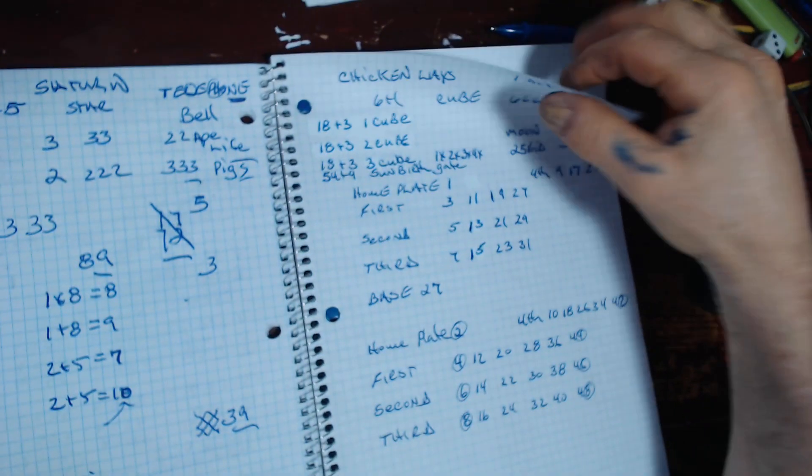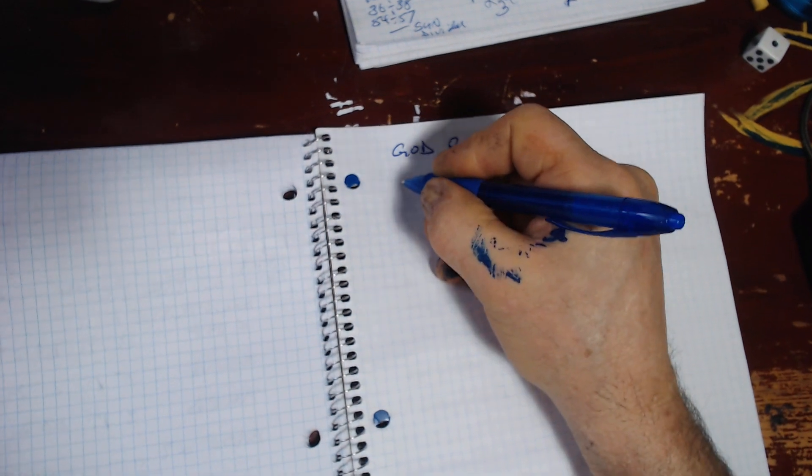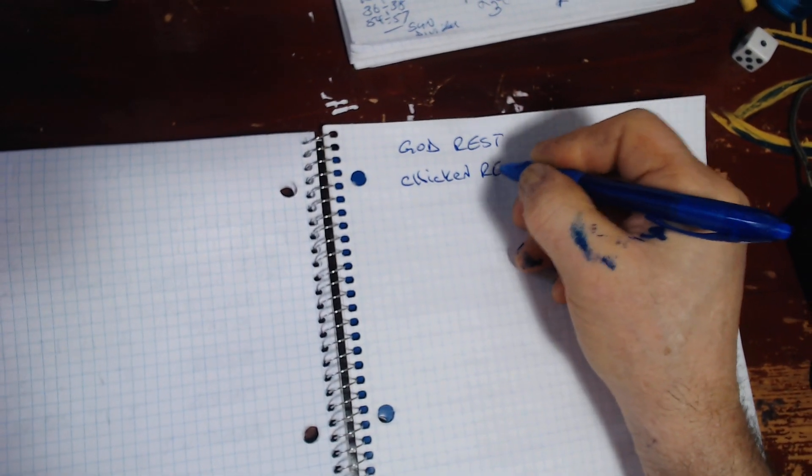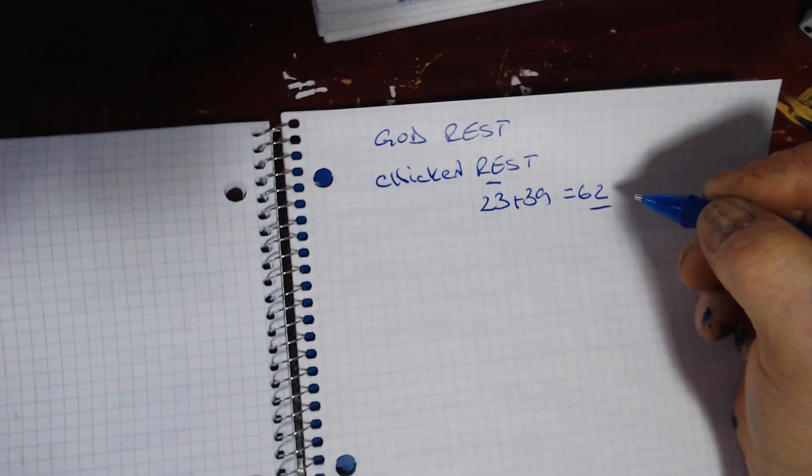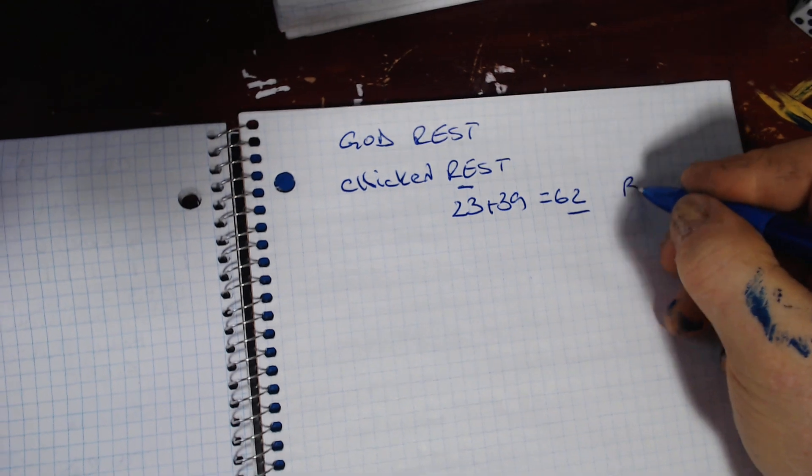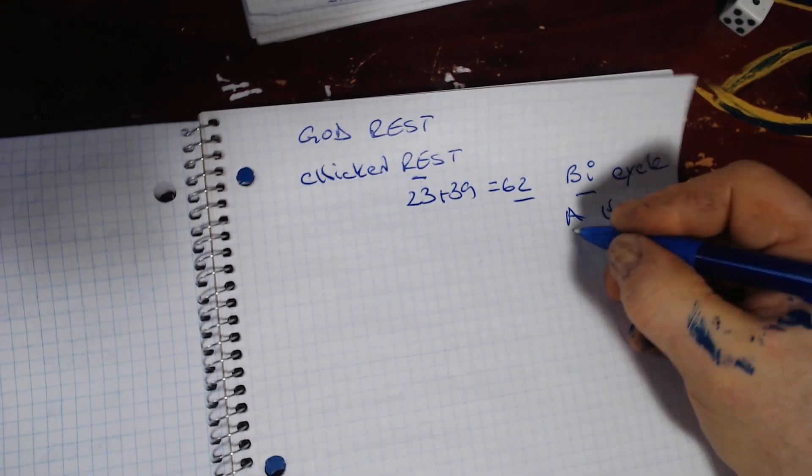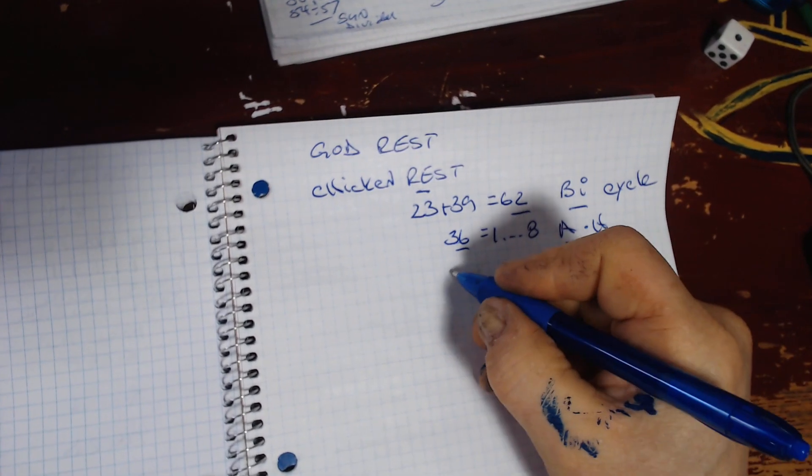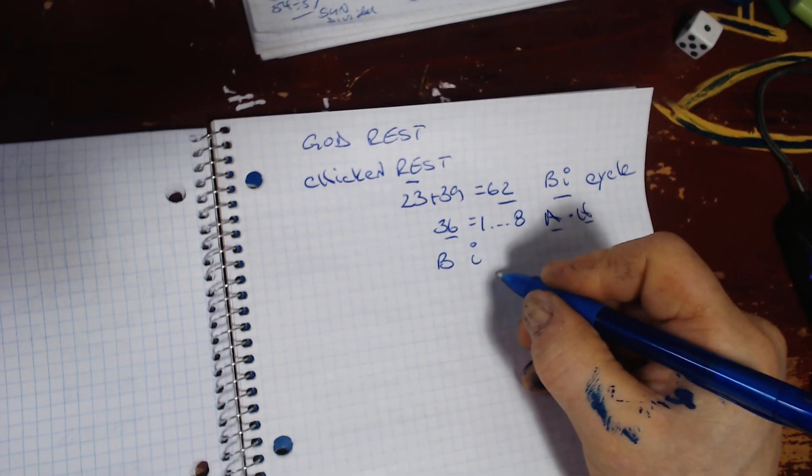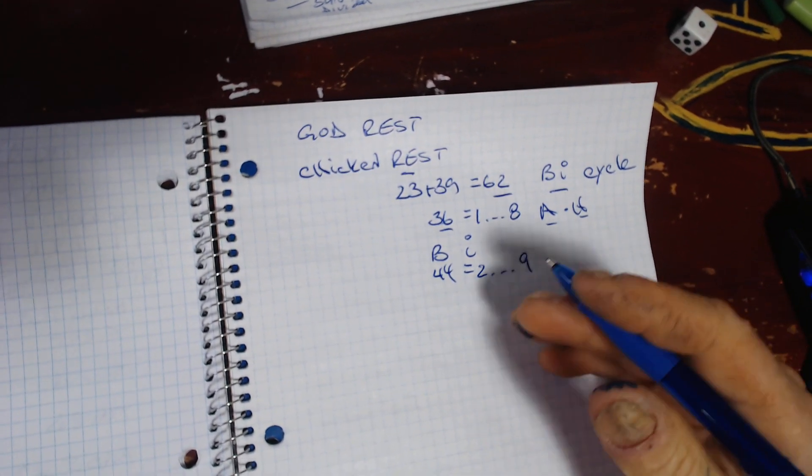What I also want to speak about is the God resting and chicken resting. RE, 23, ST equaling to 39, equaling they rest on 62. They rest on the bi-cycle. This is the heaven cycle. One through eight, equaling to 36, and they're going to rest on the bi-cycle, which is two through nine, equaling to 44. 44 for bi-cycle of area space, of a total area space of 88, cut up into areas of 22, 22, 22, 22.